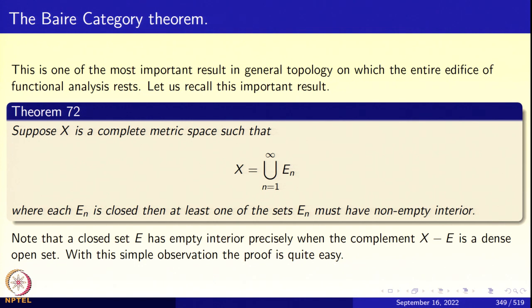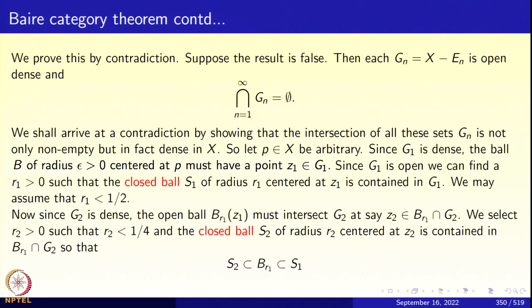Note that a closed set E has empty interior precisely when its complement is a dense open set: E is closed, so X minus E is open, and E having empty interior means the complement is dense. With this simple observation, the proof is quite easy. Let us prove this by contradiction. Suppose the theorem is false; take X minus E_n to be G_n. So G_n is an open set and it is dense because E_n has empty interior. Each G_n is a dense open set and we are getting that the intersection of G_n from n=1 to infinity is empty. We shall arrive at a contradiction by showing that the intersection is actually dense.